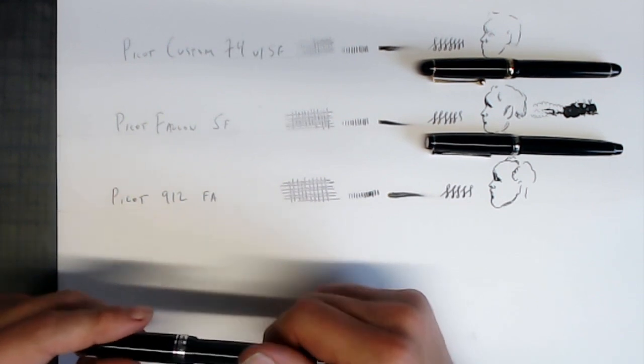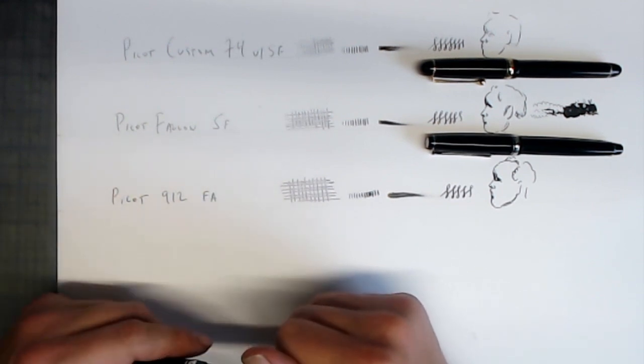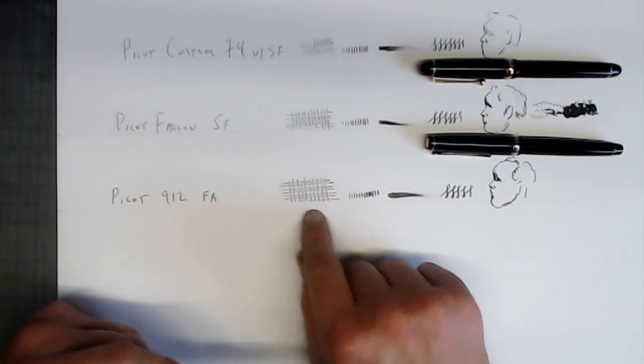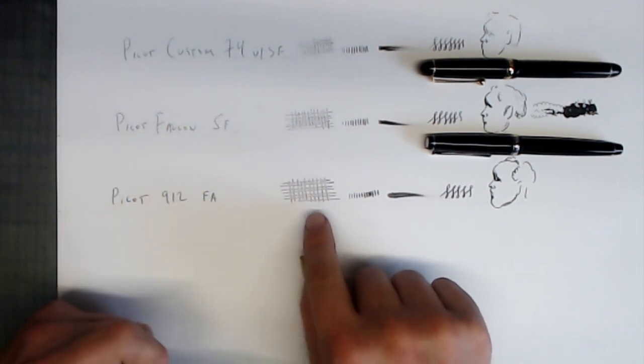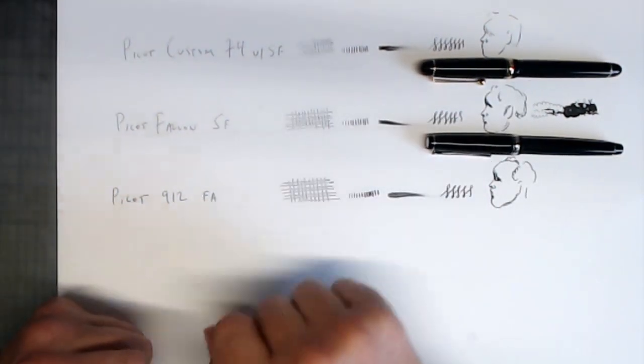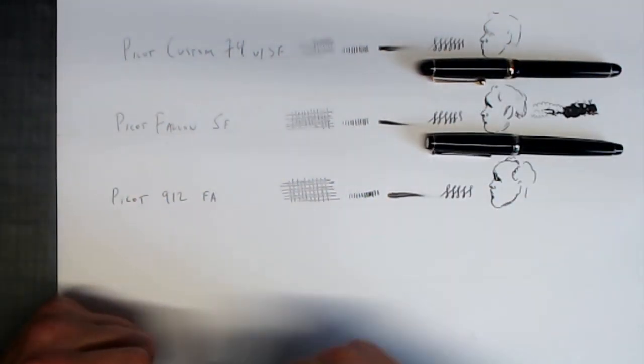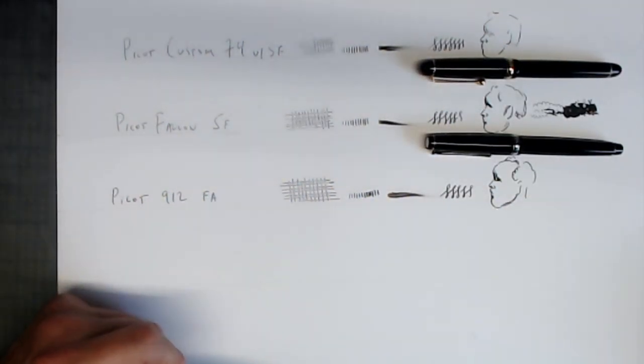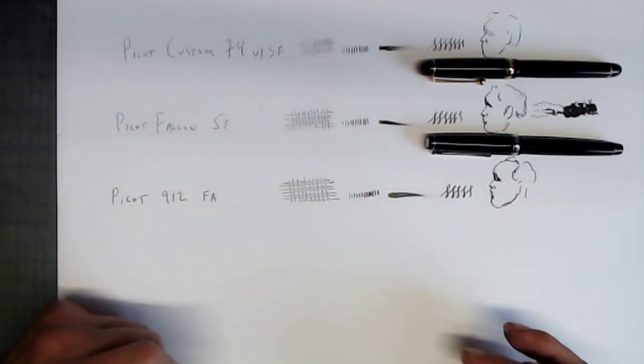However, I find myself reaching for it a lot less than my other ones simply because the line thickness. For me, I personally like having an extra fine line so I can layer my cross-hatching. With this one, it's a little too wet and a little bit too thick for my liking. But if that's your thing, I definitely get it.